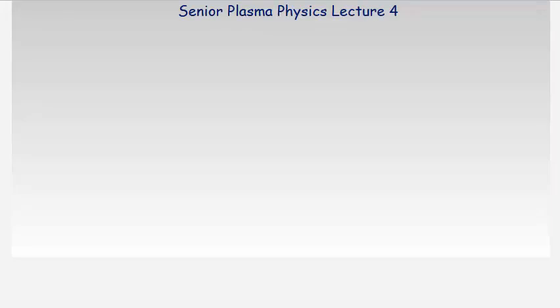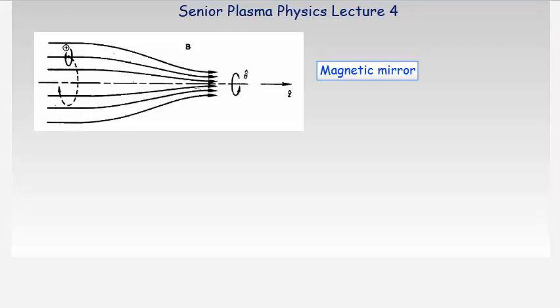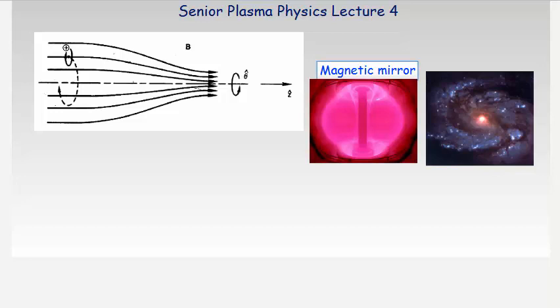Senior Plasma Physics Lecture 4. The magnetic mirror will now be investigated. It will be shown that charged particles can be reflected from a region of high to low magnetic field. There are applications for this concept in both laboratory and space plasmas.